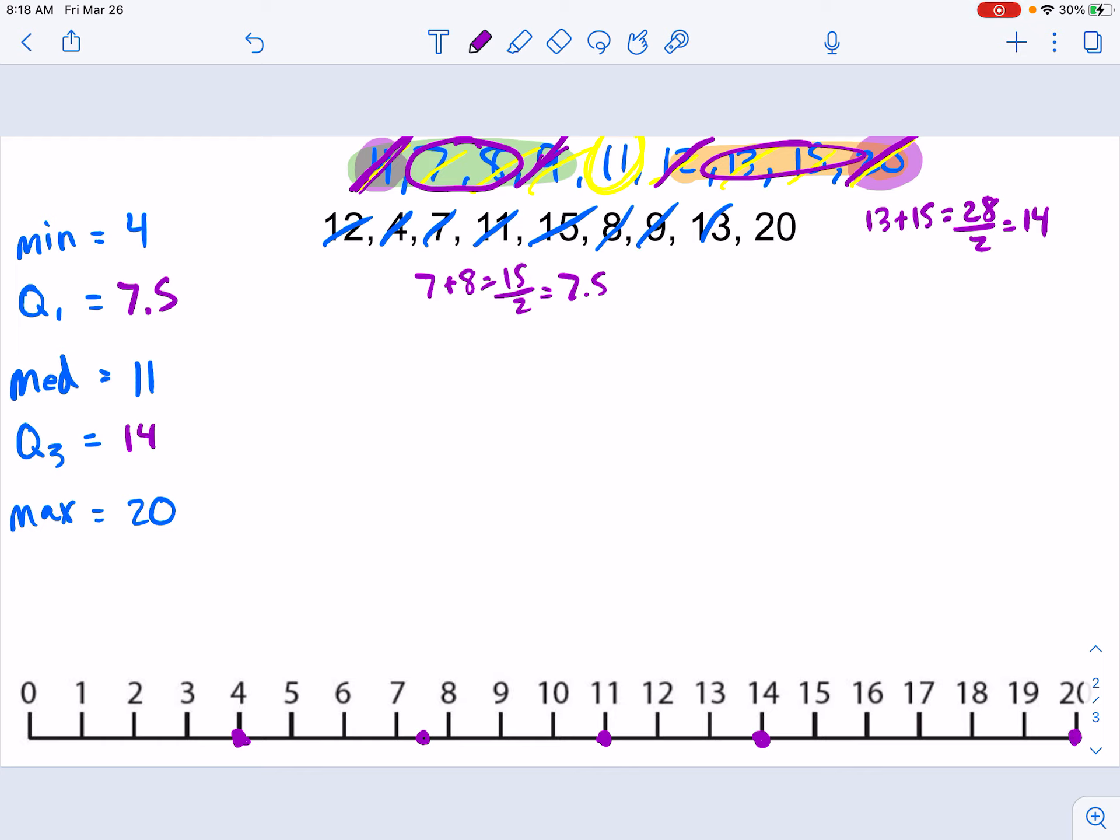We're just going to bring all of those dots just above the number line. And so our quartile 1 and quartile 3 is going to make the box. The median is our line in the middle. And then we connect the minimum to quartile 1 and quartile 3 to the maximum. And there we have a box and whisker plot.